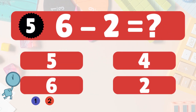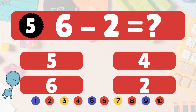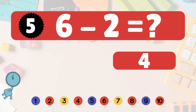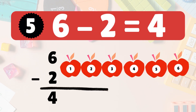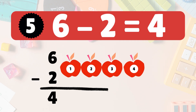Great job! Next, 6 minus 2 equals what? 6 minus 2 is 4. Here we have 6 apples. Take 2 away — 4 apples left: 1, 2, 3, 4. So 6 minus 2 is 4.